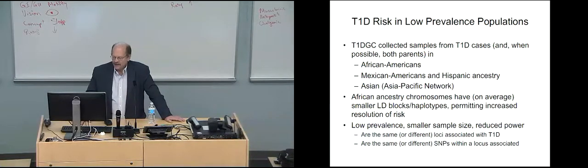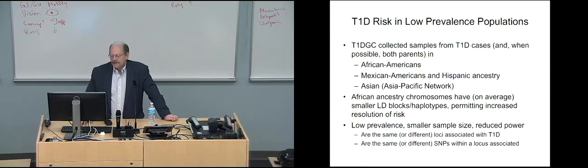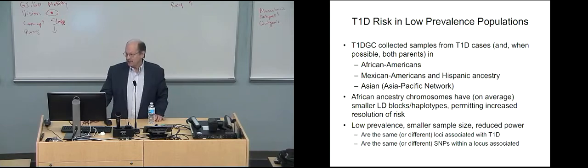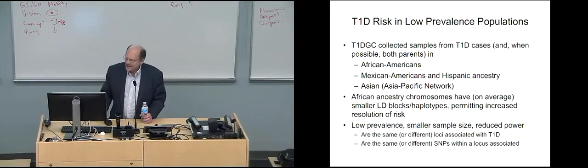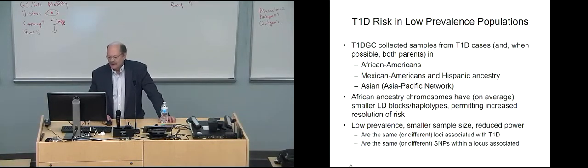We had a very good chance of getting Chinese. But at the end of the day, Chinese government, which at that time was maybe six men over the age of 85, said no, because it's not an important disease in China. We did get India. About 1,200 cases of sib-pair families from Asia-Pacific. We also had European network. And we had the UK network. UK as a continent, but also for political reasons. African ancestry chromosomes have smaller haplotype blocks and hopefully help us in resolution. A low prevalence, smaller sample size, though, reduced power. Are there the same or different loci that we see in Caucasians? Or are the same or different SNPs within a locus?